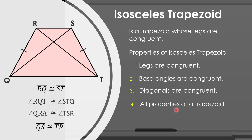Remember the trapezoid has bases, legs, and base angles. Those properties are also included in the isosceles trapezoid.